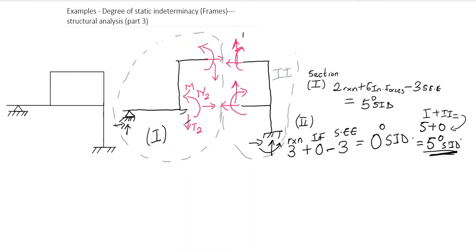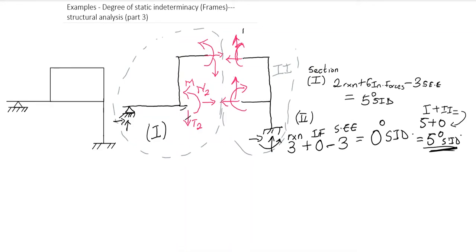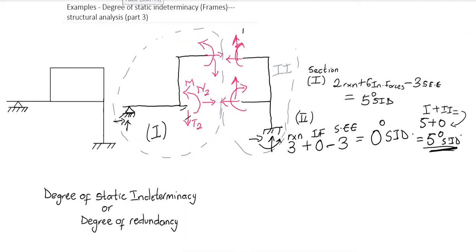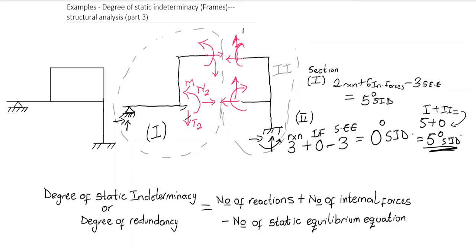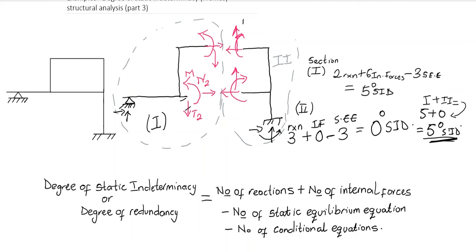This time around we'll be looking at frames with hinges. To have a quick recap on what we did in the previous session: the equation we derived for the degree of static indeterminacy — sometimes called the degree of redundancy — is equal to the number of reactions plus the number of internal forces minus the number of static equilibrium equations. Because we are considering hinges, we are also going to subtract the number of conditional equations.